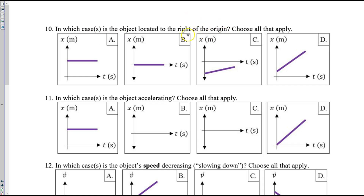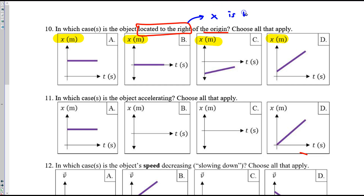Number ten — in which cases is the object located to the right of the origin? These are position graphs, and your position is positive, or to the right, when the value is positive. So where do we see positive position? That's A and D.